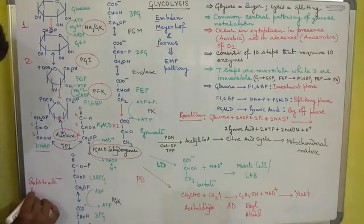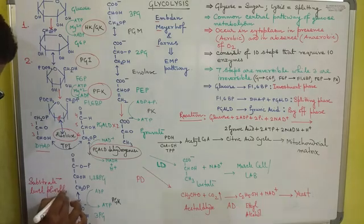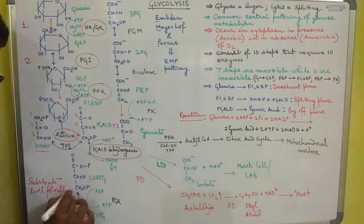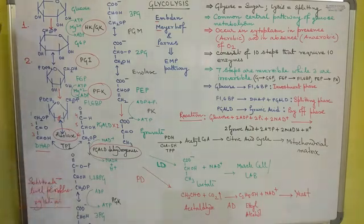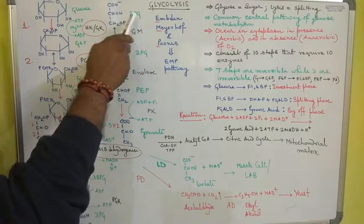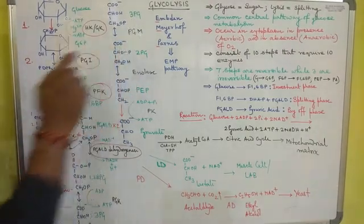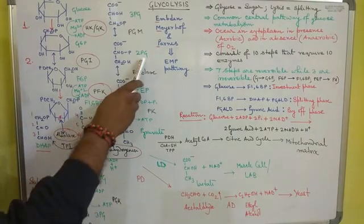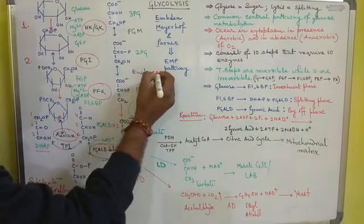Substrate-level phosphorylation means that during the addition of a phosphate group to ADP, the phosphate comes from the substrate of the reaction. Then 3-phosphoglycerate is converted into 2-phosphoglycerate by the enzyme phosphoglycerate mutase. 2-phosphoglycerate is then converted into phosphoenolpyruvate (PEP) by the enzyme enolase.